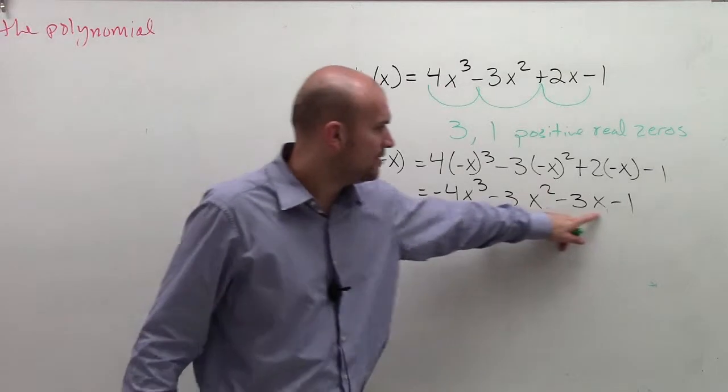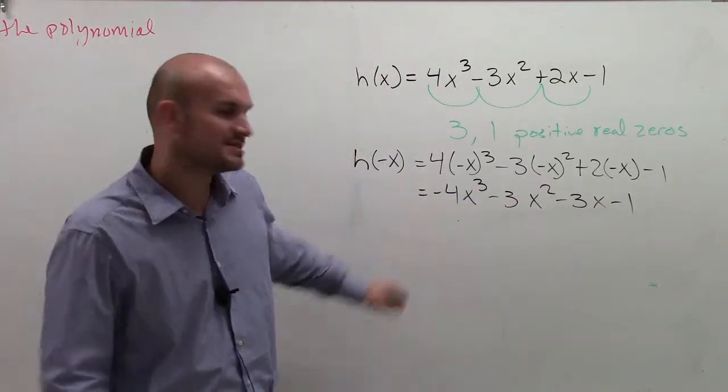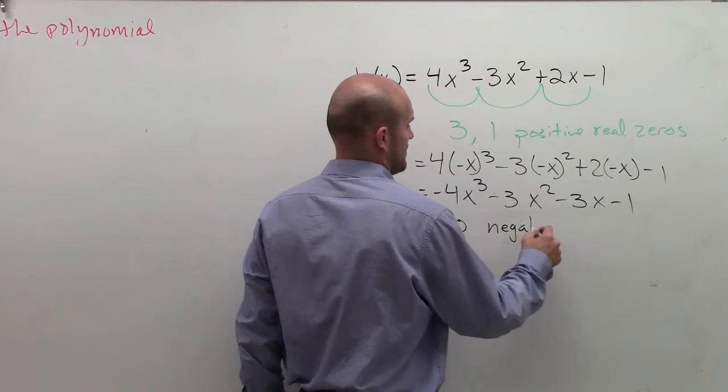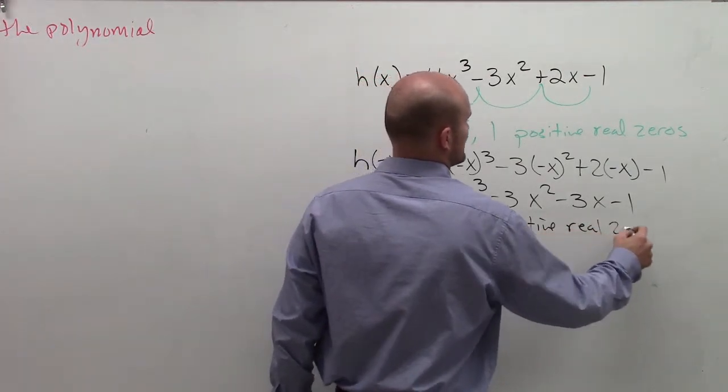And what we notice is now we have no variation of sign. So there's zero negative real zeros.